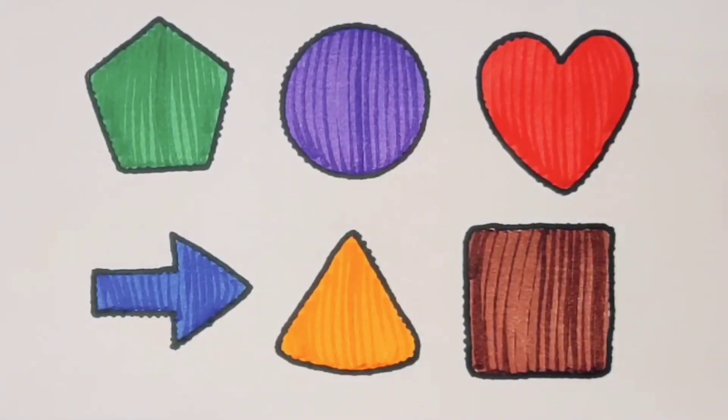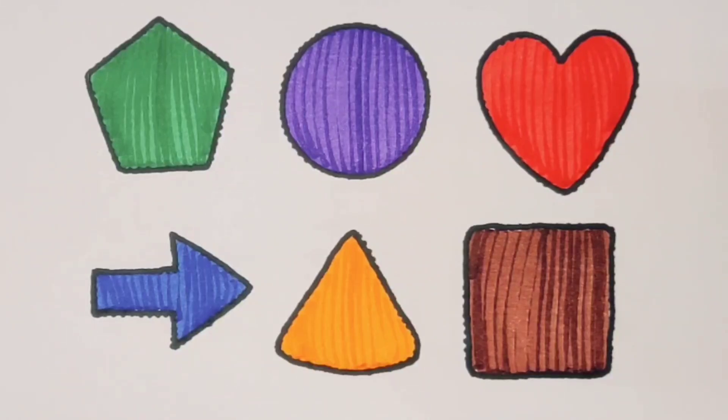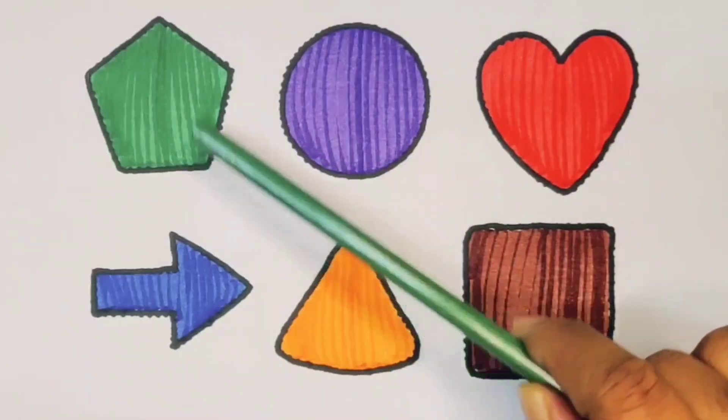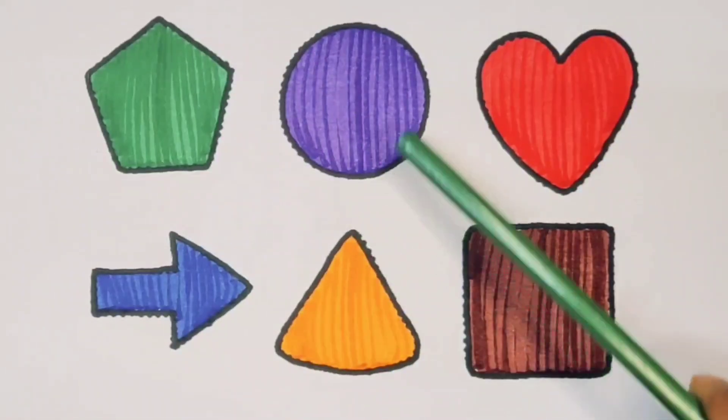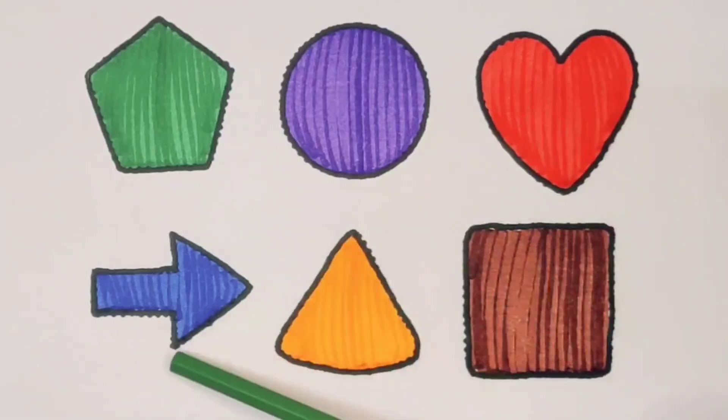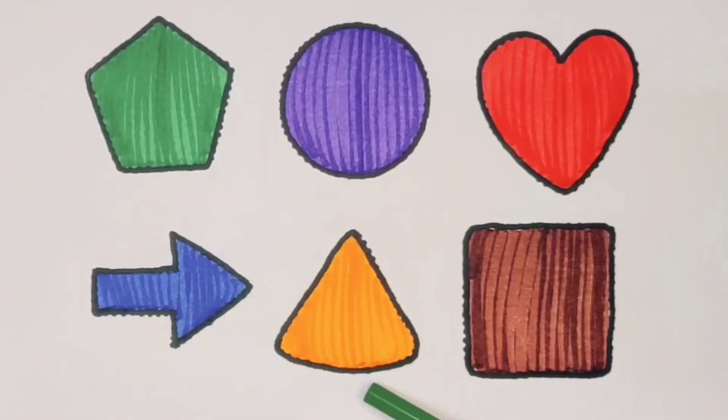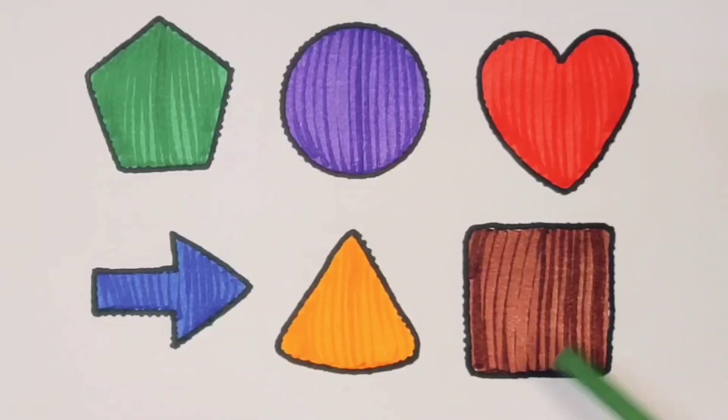What we learned: green color pentagon, purple color circle, red color heart, blue color arrow, orange color triangle, chocolate color square.